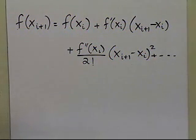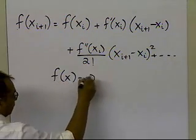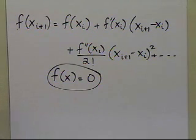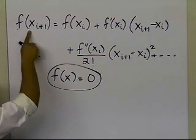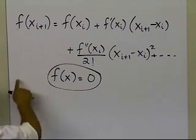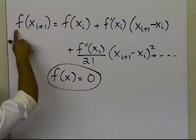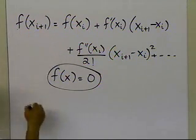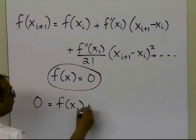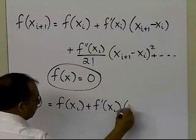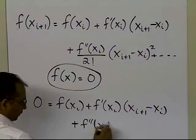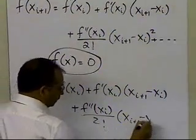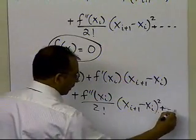There are infinite terms in this series. Newton-Raphson method is used for finding the root of the equation f(x) = 0, so you're looking for that value of x where the function becomes 0 — that is, the point x_{i+1} where the function becomes 0. So setting the expression to zero: 0 = f(x_i) + f prime of x_i times (x_{i+1} minus x_i) + f double prime of x_i divided by factorial 2 times (x_{i+1} minus x_i) squared, and so on — infinite terms.